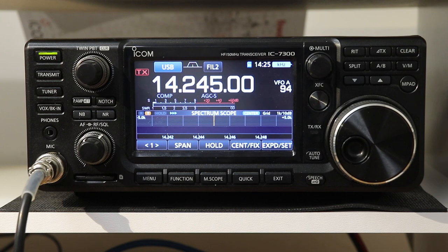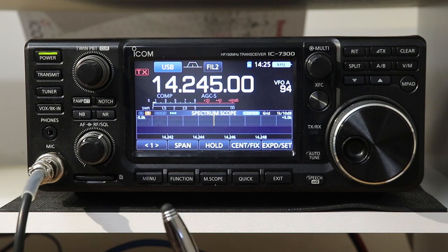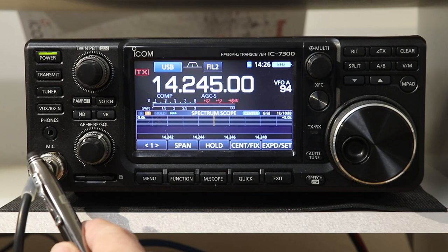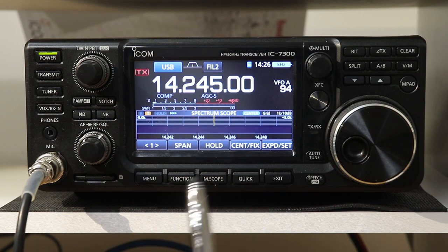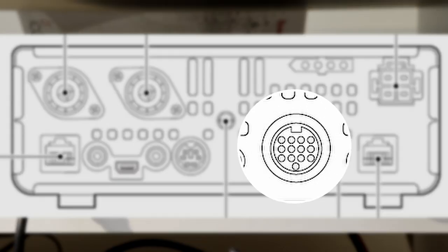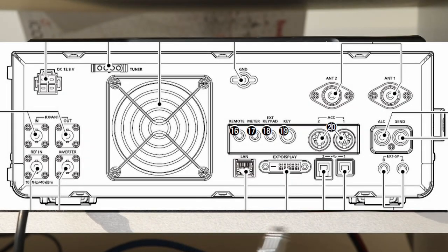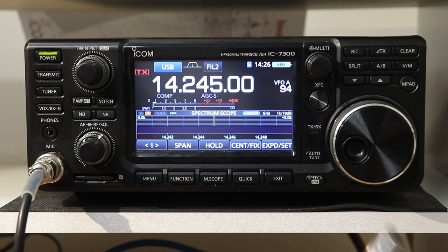I'm showing you this on an IC7300 today, and this is going to apply to all of those radios I mentioned because the transmit audio inputs and input options are very similar between all of these radios. All of the radios in the list can get audio from the microphone jack, and they can all get it from a USB port on the back of the radio connected to your computer. Some of the radios have an accessory jack, and some have Wi-Fi or LAN inputs that they can get audio from, and you can select between those in the settings menus.